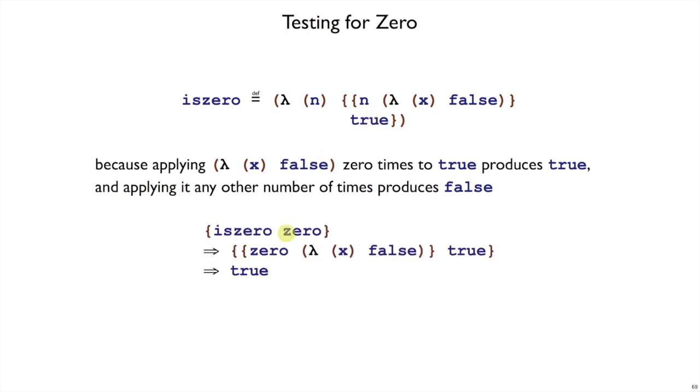So we could double check. is0 applied to 0 is the same as substituting in 0 for n here. So we get this term. That's 0 times apply this function to true. So we just get true out. But if we do is0 of 1, it'll be one time apply this function to true, which is just applying that function to true and we'll get false out.